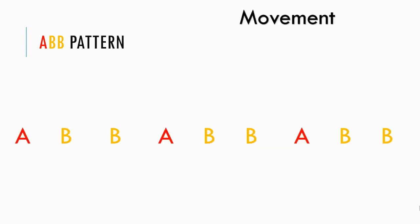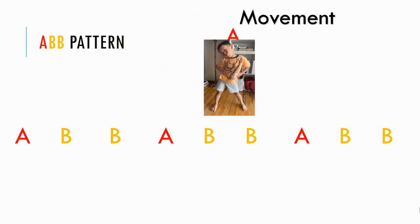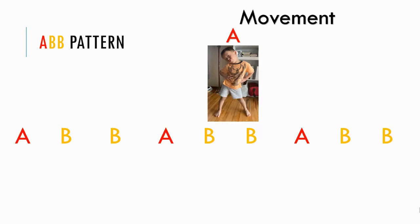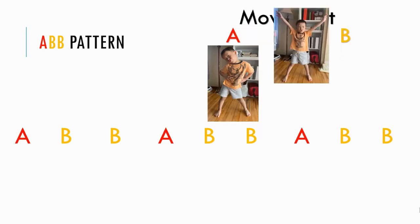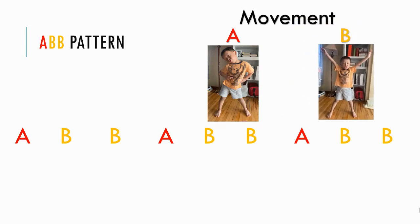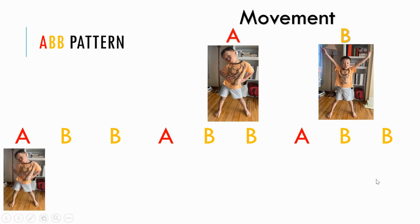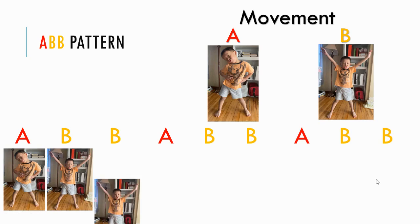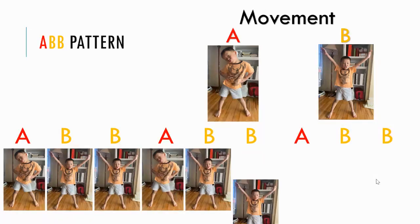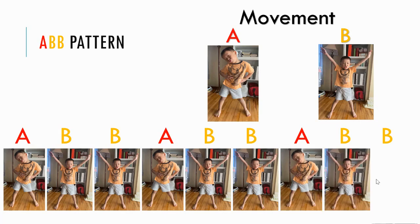Let's look at another ABB pattern, this time with movement. You can make patterns with your body. So let's say A is posing and B is jumping jack. This is Kyle — he's posing with his arms across his waist and then he's doing a jumping jack. So let's do our pattern: pose, jumping jack, jumping jack. Pose, jumping jack, jumping jack. Pose, jumping jack, jumping jack.